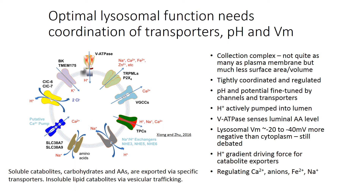We don't think that lipids are exported through transporters; current thinking is that most lipid waste is removed via vesicular exocytosis. Finally, I'd like to point out the importance of cation channels, particularly the TRPML family, which are permeable to sodium, calcium, iron, zinc, and other cations, and we think have an important role in multiple lysosomal functions that I'll talk about at the end of this section.